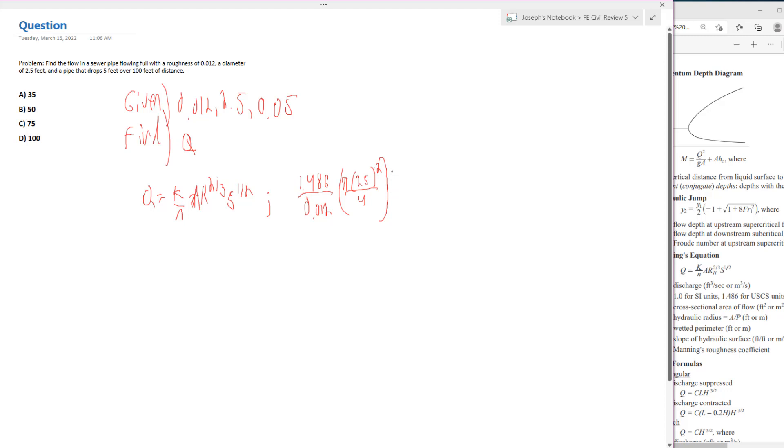Now, hydraulic radius is A over P, or the area over the wetted perimeter. Since there's a pipe flowing full, we shouldn't have many problems with that. So the area, similarly, will be pi 2.5 squared over 4. And the perimeter, if you remember what the perimeter of a circle is, it's 2 pi r.